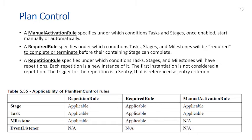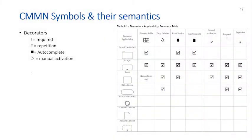These rules are not applicable to everything. Repetition and required rules apply to stages and tasks; a milestone cannot have a manual activation rule, and event listeners cannot have any of these rules. Decorators symbolize these rules visually: the exclamation mark for a required rule, the hashtag for a repetition rule, a black box for autocomplete, and a triangle for manual activation.